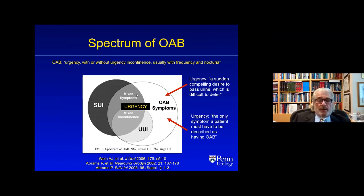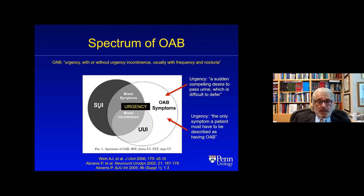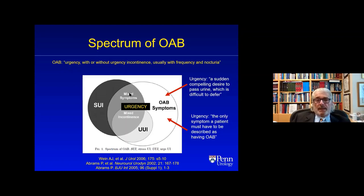This Venn diagram shows where overactive bladder symptoms sit. You can have OAB wet with urgency urinary incontinence — about a third of OAB patients. You can have OAB dry — about two thirds. You can have OAB and stress urinary incontinence. One thing always left out is mixed symptoms: someone who has stress urinary incontinence and OAB dry but no urgency urinary incontinence. Mixed incontinence in the literature usually means a combination of stress and urgency incontinence, leaving out that group. I think there should be another category we refer to simply as mixed symptoms.